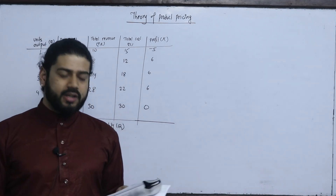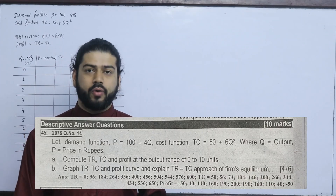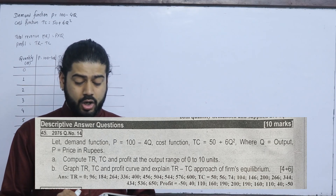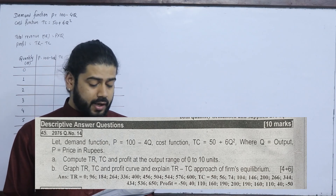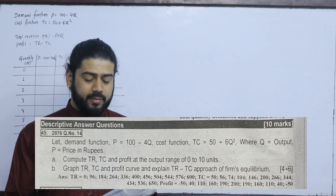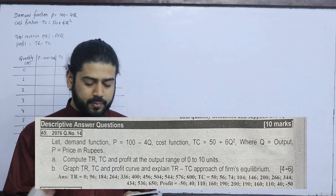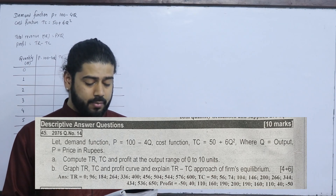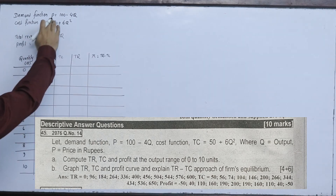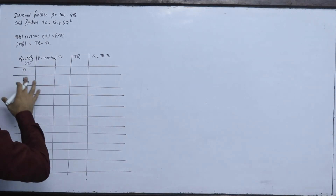Now for the next question, we will plot marginal cost and marginal revenue. The demand function is p equals to 100 minus 4q, where p is price and q is quantity. The cost function is TC equals to 50 plus 6q squared, where q is output and p is price in rupees. We need to compute TR, TC, and profit at output range from 0 to 10.